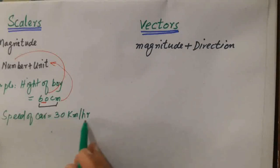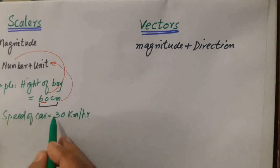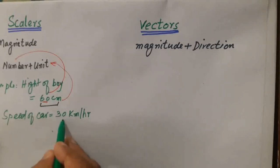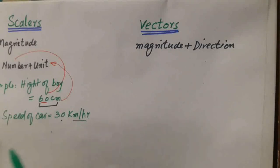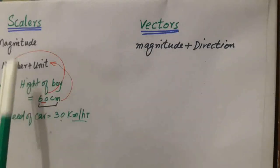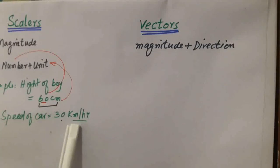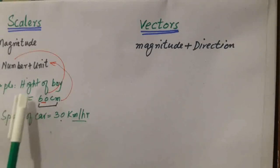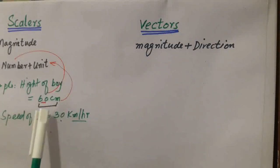The magnitude is 30 km per hour. The number 30 with the proper unit km per hour — that is the scale of the quantity. The magnitude represents speed, height, or length.